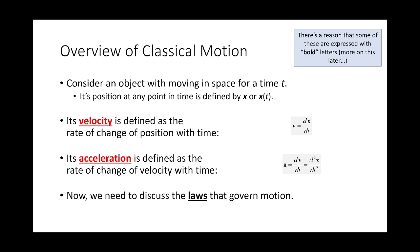Is everybody okay with that concept? An object's acceleration is the rate of change of its velocity — for example, its velocity might be 50 miles per hour, and its acceleration is how fast it got to that 50 miles per hour. So acceleration is the derivative of velocity with respect to time, or the second derivative of position with respect to time.